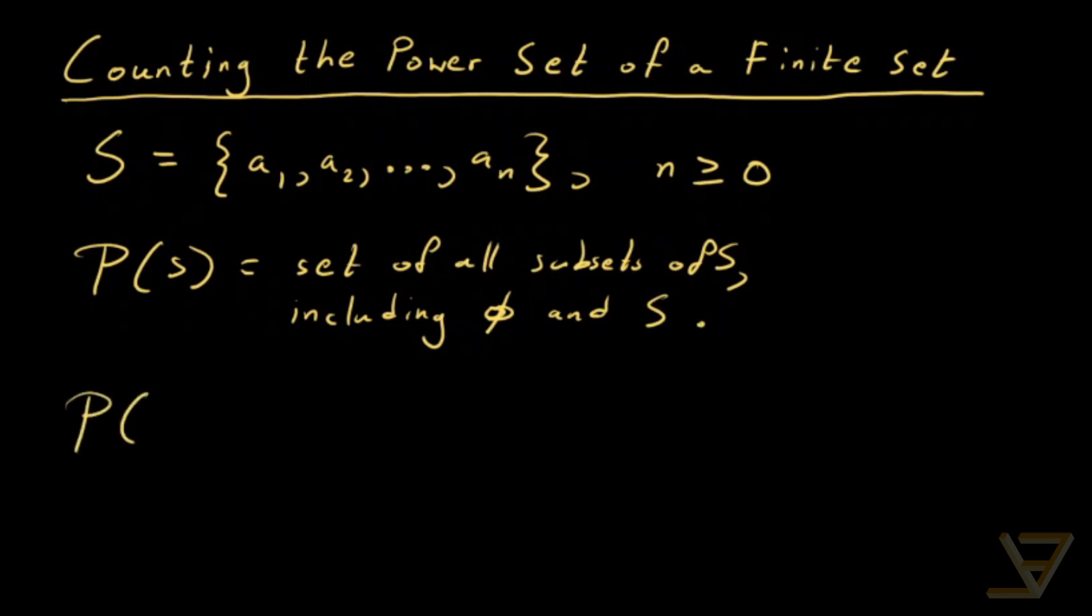Let's say the power set of the set that contains 1 and 2 is equal to the following set. We have the empty set, the set containing only the element 1, the set containing only the element 2, and the set containing 1 and 2, which is the whole set. So there are 4 elements.